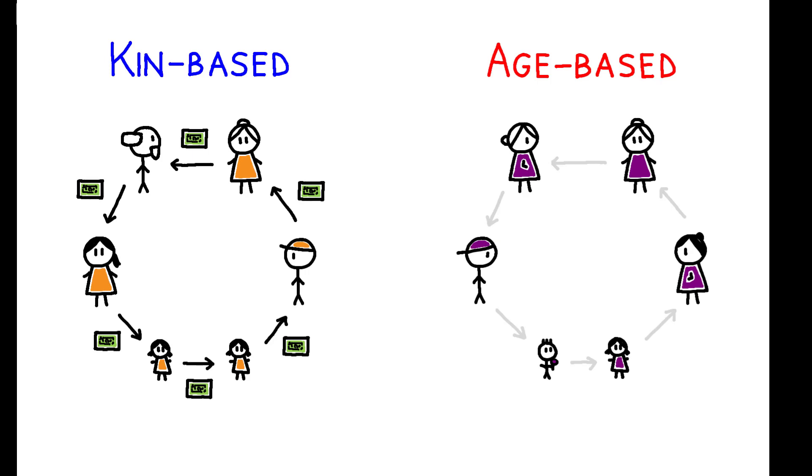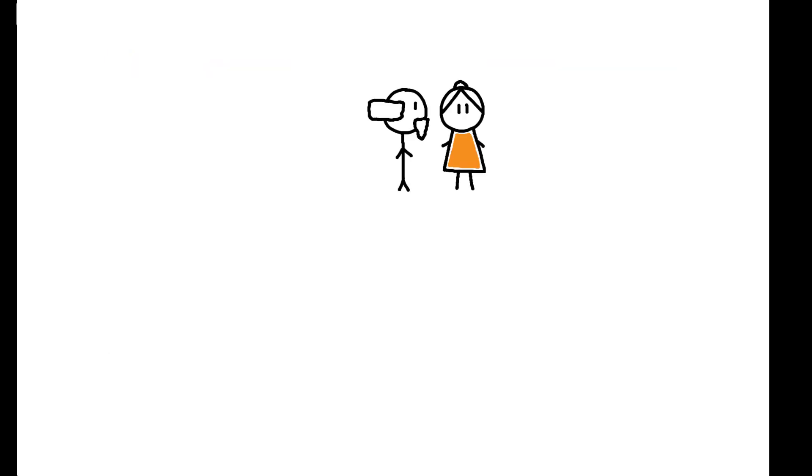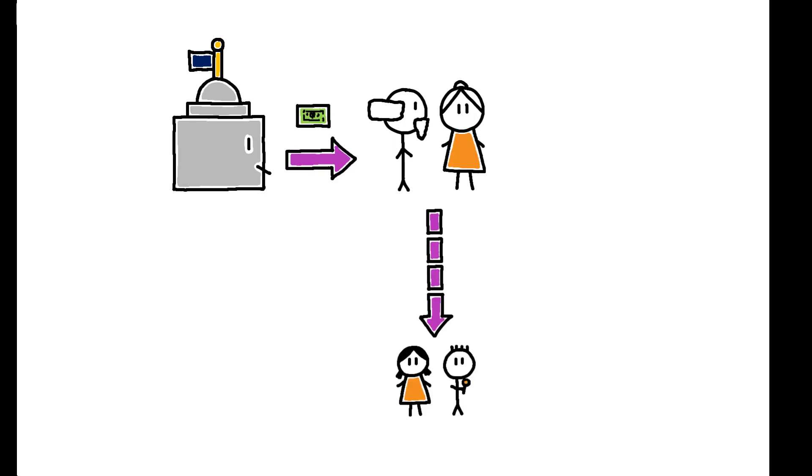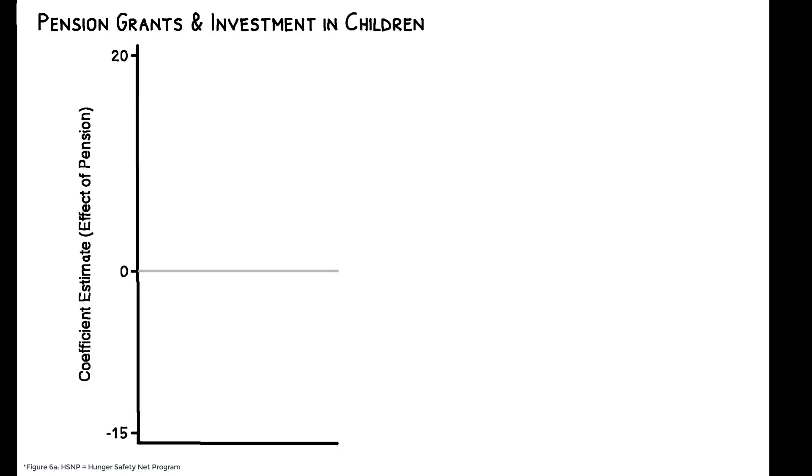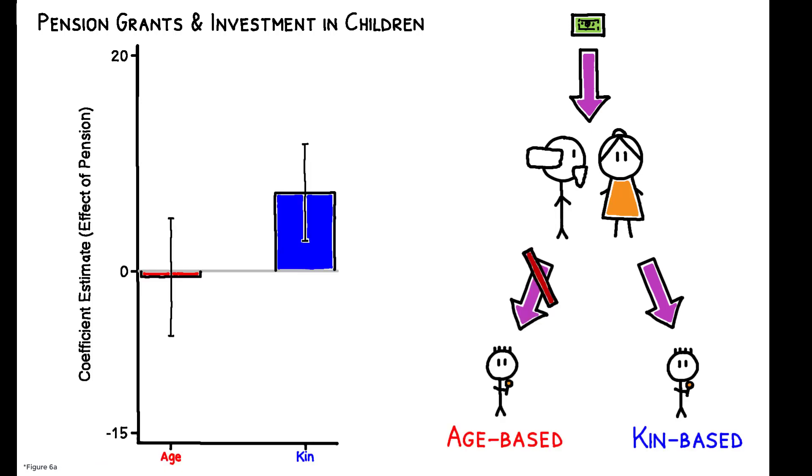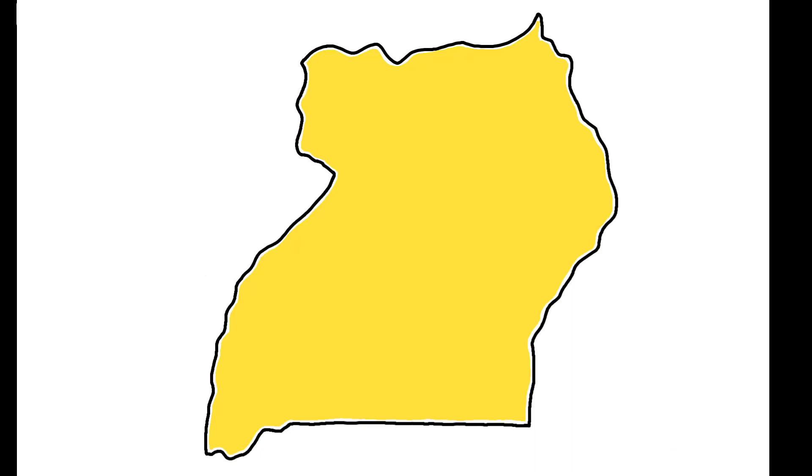This is notable, as policies aimed at adults are often assumed to have benefits that spill over to children. For example, the benefits of pension programs are typically thought to extend to children as grandparents invest in their grandchildren. But results from the HSNP pilot show that pension grants lead to substantial increases in child weight and educational investment in kin-based societies, but not in age-set societies.